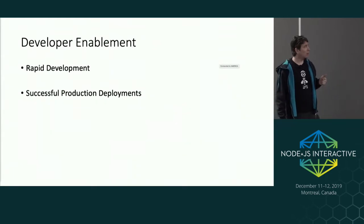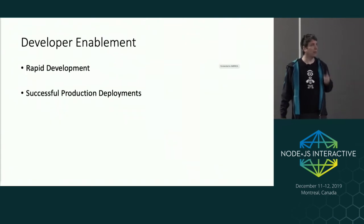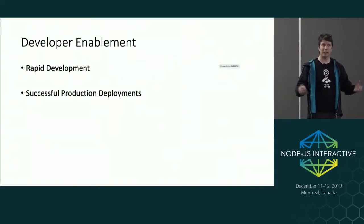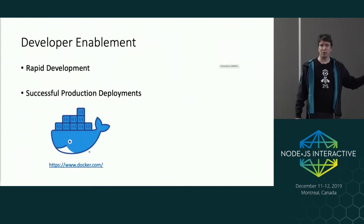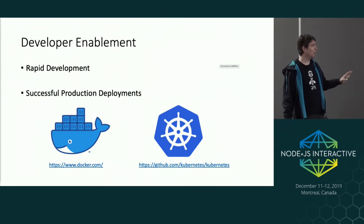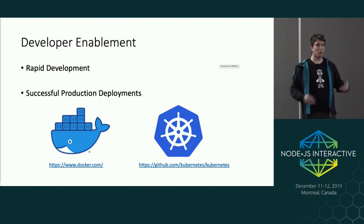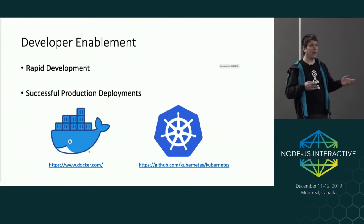Two key things for developer enablement are rapid development — creating the first version of your application quickly and iterating incrementally — and being successful in production. Today that really means deploying in Docker and taking those Docker images and deploying them at scale in a Kubernetes environment. I'm not a Kubernetes expert; I'm more the Node developer coming to the cloud-native and Kubernetes world.